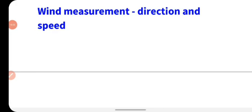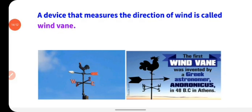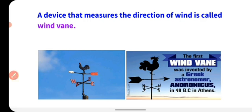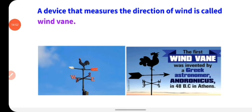Now we will talk about wind measurement — how the direction and speed of wind is measured. A device that measures the direction of wind is called a wind vane. Hawa ek direction mein flow karti hai, aur uska direction jaanne ke liye hum wind vane ka istemal karte hain. You can see here — this simple arrow-like structure is a wind vane. Below it you can see the directions. The first wind vane was invented by Greek astronomer Andronikus in 48 B.C. in Athens. The arrow of the wind vane tells about the direction of the wind.